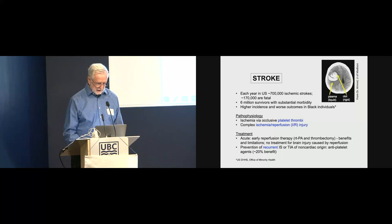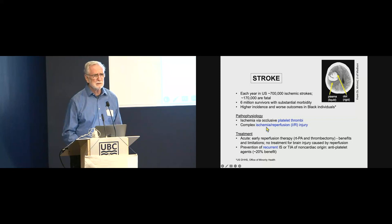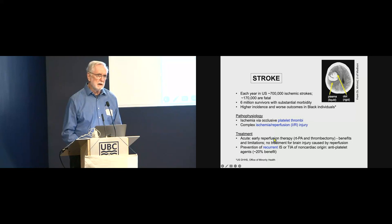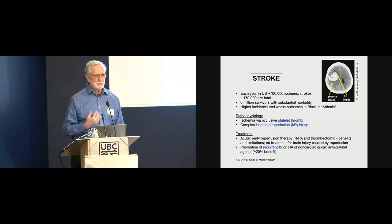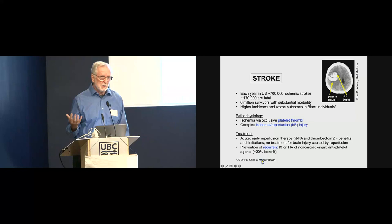A word about pathophysiology. There's a strong ischemic component via platelet thrombi during an ischemic stroke, and then a complex ischemia-reperfusion injury when reperfusion occurs after the ischemic event. Treatment is not great. In acute stroke, people attempt to revascularize with recombinant TPA or thrombectomy — that intuitively makes sense: restore blood flow. However, that reperfusion also causes a complex injury and there's no treatment for that injury. We try to prevent recurrent stroke with antiplatelet therapy.